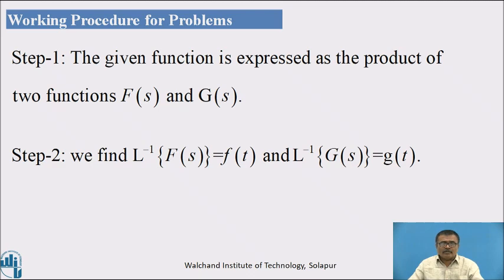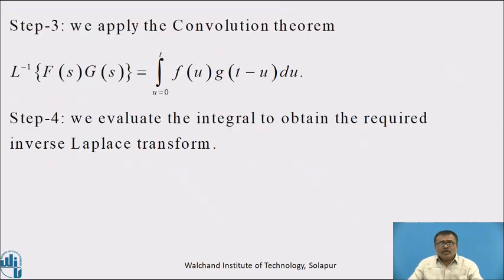Working procedure for problems. Step 1: the given equation is expressed as the product of two functions F(s) and G(s). Step 2: find L⁻¹{F(s)} = f(t) and L⁻¹{G(s)} = g(t). Step 3: apply the Convolution Theorem, L⁻¹{F(s)·G(s)} = ∫₀ᵗ f(u)·g(t−u) du. Step 4: evaluate the integral to obtain the required inverse Laplace transform.